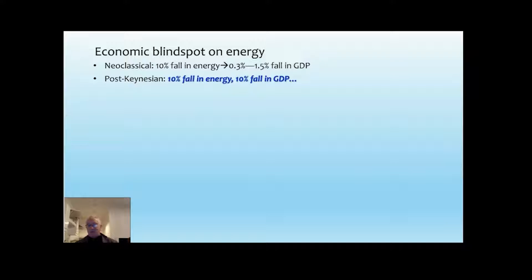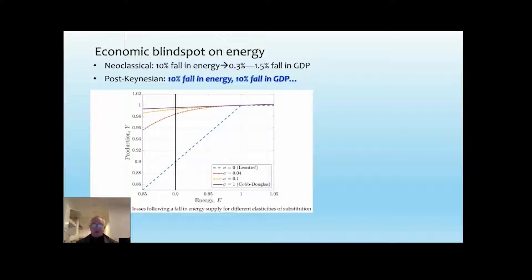And if you use a CES function with low levels of substitution, you can get a 1.5% fall. But that's about it. So the change in energy is six times as big as the resulting change in GDP, maybe even 30 times as big. Now the post-Keynesian model says 10% fall in energy, 10% fall in GDP. And Bachmann put this graph together to contrast the different theories, which is very useful for my purposes. So that is the neoclassical minimum, a 10% fall in energy going from 100% here to 90% there, causes a 0.4% fall in GDP. That's the stock standard Cobb-Douglas production function. CES with low substitutability gives you a maximum level of damage of about 1.5% fall in GDP for a 10% fall in energy. Whereas the Leontief model, one-for-one proportionality between energy and GDP, and that gives you a 10% fall.